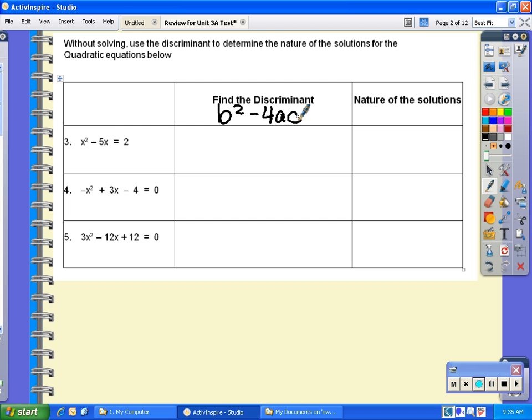For number three, you first have to subtract two from both sides to get it equal to zero, which means you're left with x² - 5x - 2 = 0. From that, a = 1, b = -5, and c = -2.